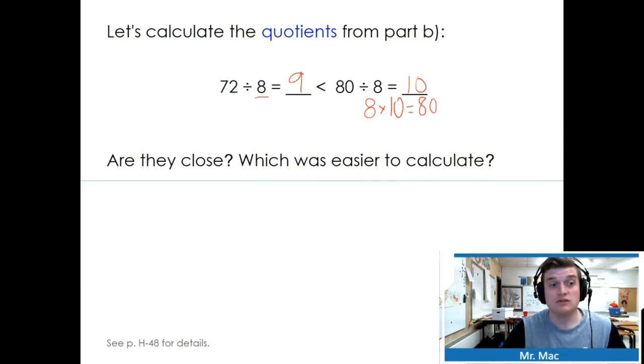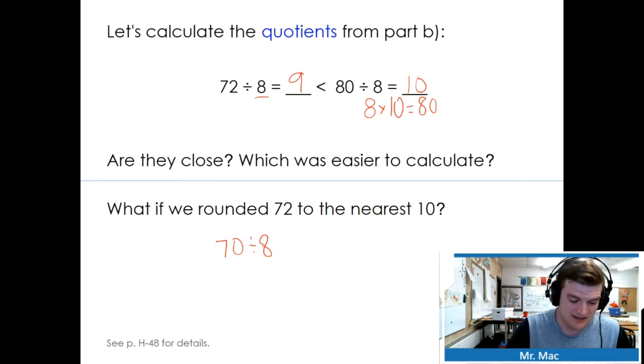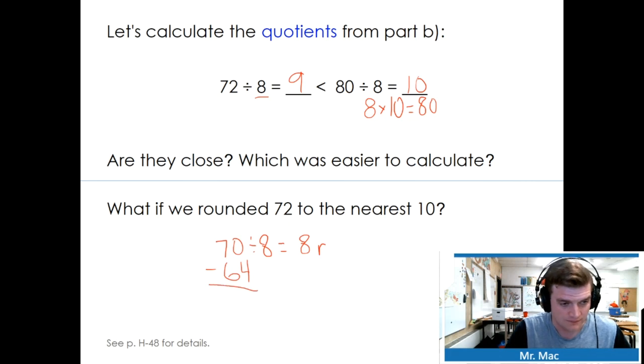Are they close? Which was easier to calculate? 80 divided by 8 was a lot easier to calculate because we know that 8 times 10 equals 80. What if we rounded 72 to the nearest 10? That would be 70 divided by 8. We know from skip counting that 8 times 8 is 64. So that equals 8 with the remainder, 70 minus 64, of 6. It didn't divide evenly, so it wasn't very helpful to round the number.